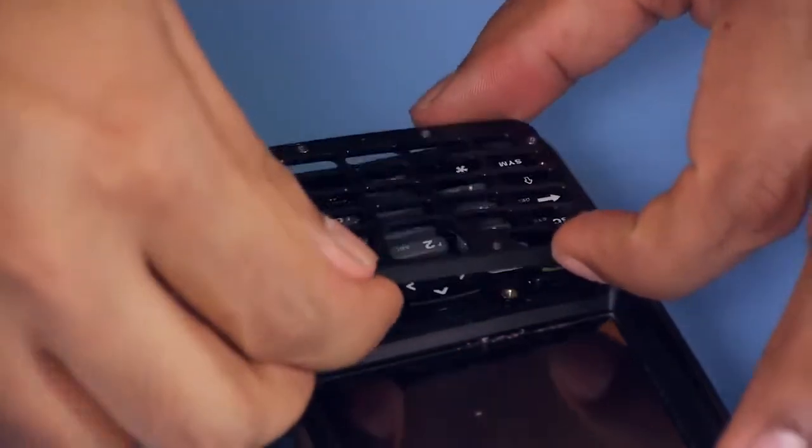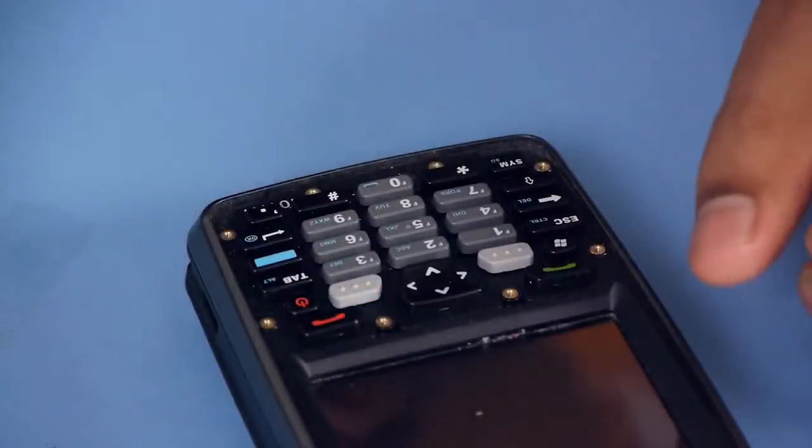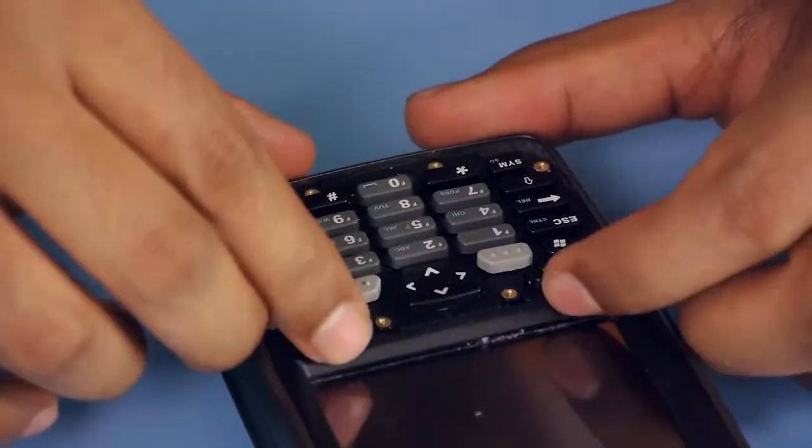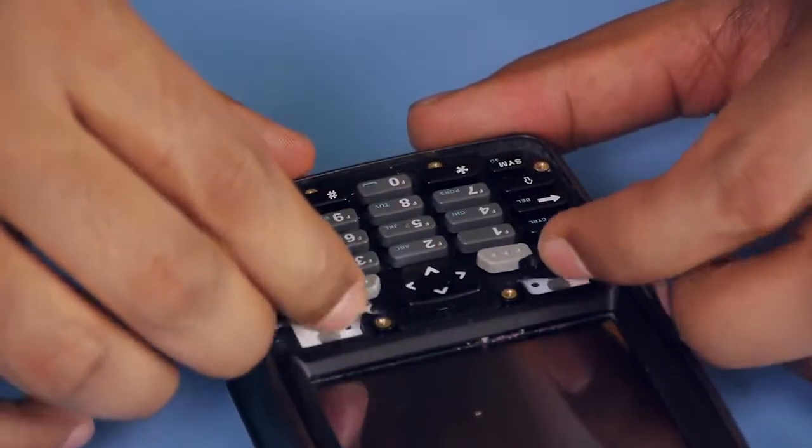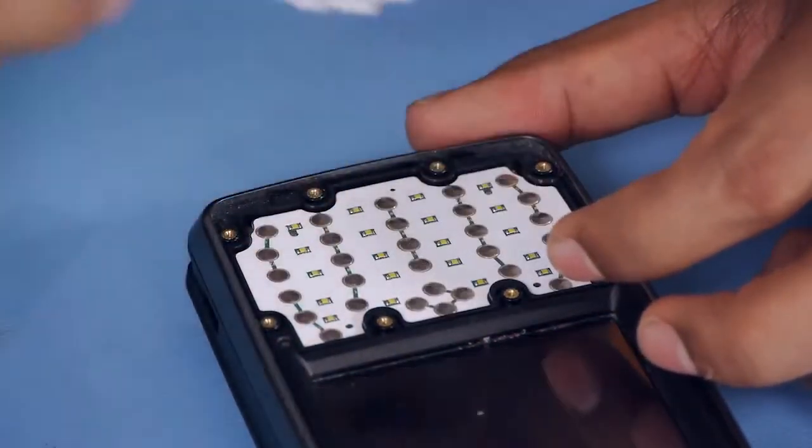And then you've exposed the elastomer. All you need to do is remove that to get access to the keyboard PCB.